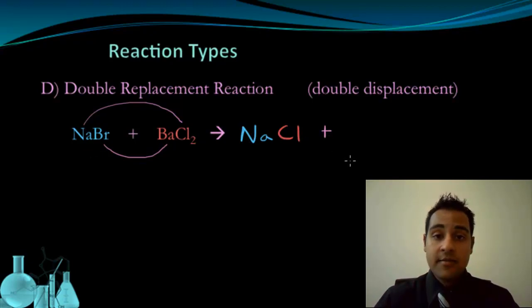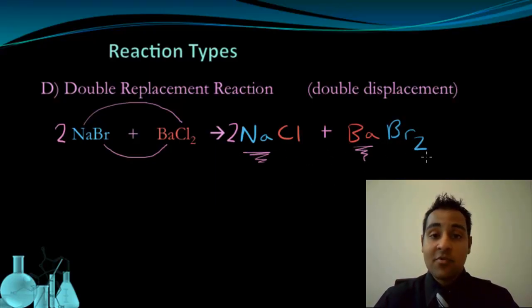NaBr plus BaCl₂ gives us NaCl plus BaBr₂. Now I should balance this too, which means there's going to be two of these and two of these. But generally you can see that the Na is now with the Cl, and the Ba is with the Br. Note that I left the metal cations in the first position in this double replacement. I didn't write BrBa because we write the metal cations first in the ionic compound.